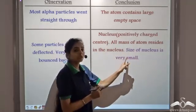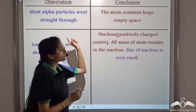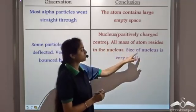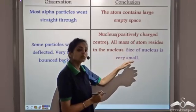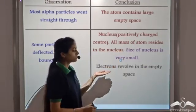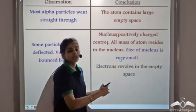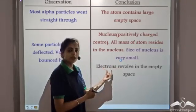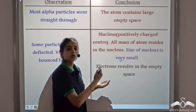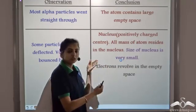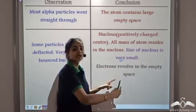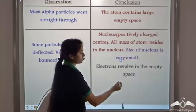The size of the nucleus is very small. Since most particles pass straight through without deflection, the nucleus is very small compared to the atom. The electrons revolve in this empty space. Since the mass of electrons is very small compared to the mass of protons, they do not cause any deflection in the path of the alpha particles, and so these electrons revolve in the empty space around the nucleus.